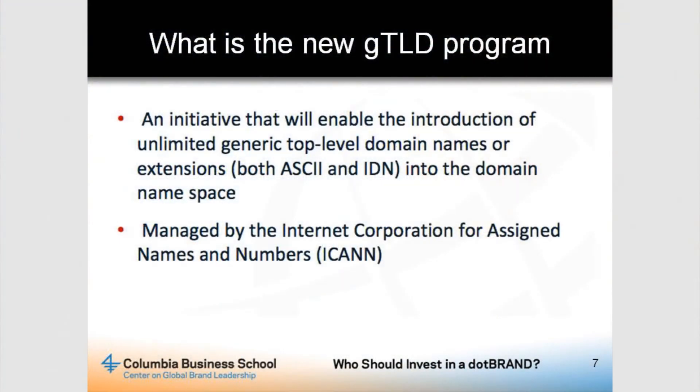Since really 1999, but particularly since 2003, there's been a policy process across all the constituencies of ICANN — which is government, business, technical, civil society — with large input from the intellectual property community, to devise a mechanism where we can have more competition and choice about those next-level domains, both allowing them in Roman characters or ASCII, and also in non-Roman characters.